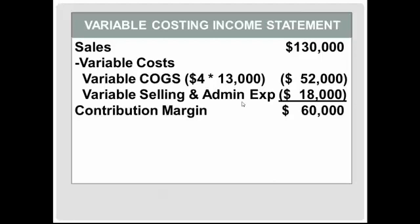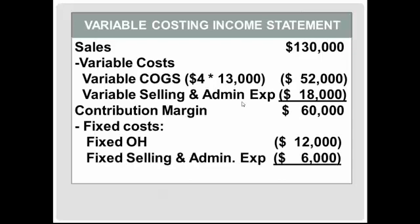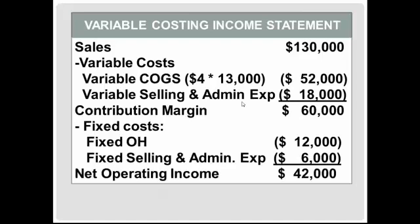This leaves a contribution margin of $60,000. Next, we'll subtract our fixed costs. You will typically have fixed production costs and fixed selling and administrative costs. Fixed overhead is $12,000, and under variable costing we expense all of that — we do not treat it as a product cost at all; we expense it in the period incurred. Fixed selling and administrative expenses of $6,000 are also expensed in the period incurred. This leaves us with net operating income of $42,000.